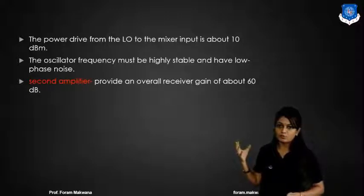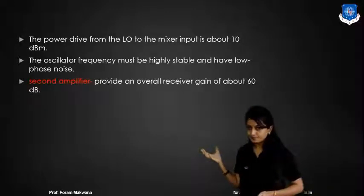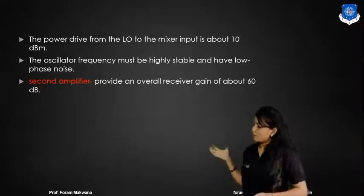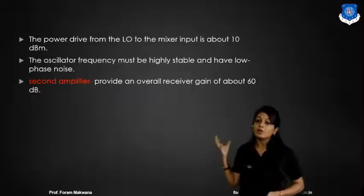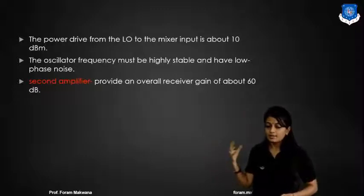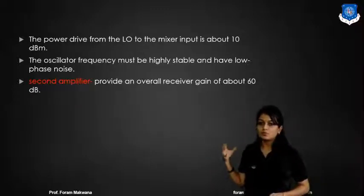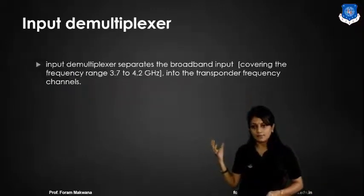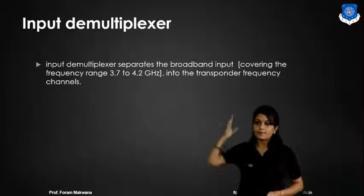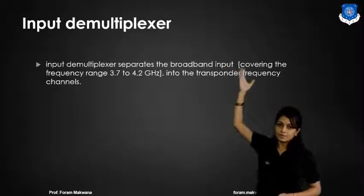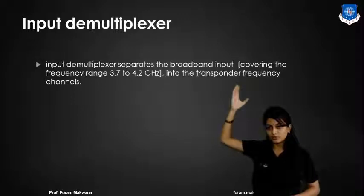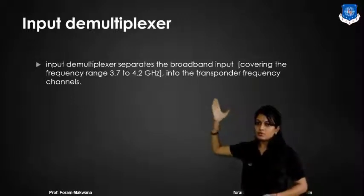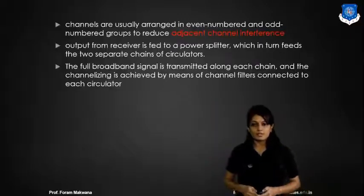The power that comes along with the mixer is about 10 dB. The oscillator frequency must be stable and have low phase noise. The second amplifier provides the overall gain of about 16 dB. The input demultiplexer separates the full bandwidth input, covering the frequency from 3.7 to 4.2 GHz, into the individual transponder frequency channels.